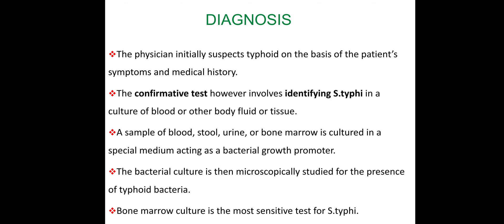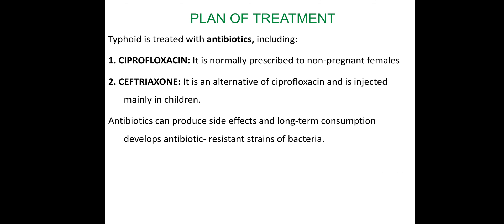For diagnosis, blood diagnosis is one option — we can easily identify Salmonella typhi through blood culture. The plan of treatment involves two major drugs: ciprofloxacin and ceftriaxone. Antibiotics can produce side effects, and long-term consumption can lead to antibiotic-resistant strains of bacteria.